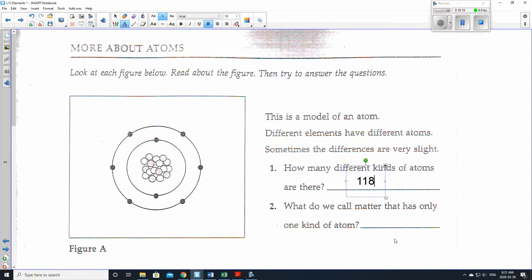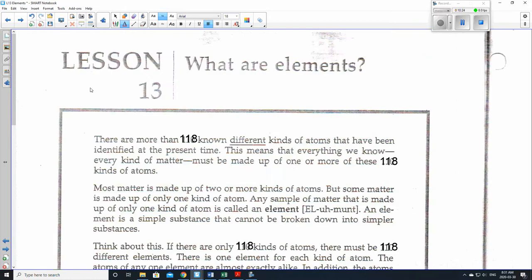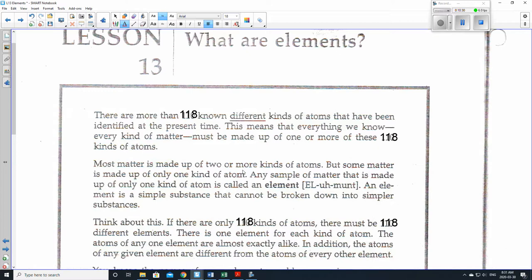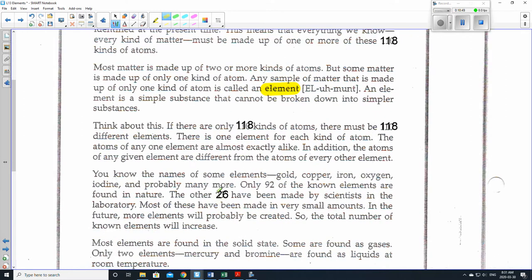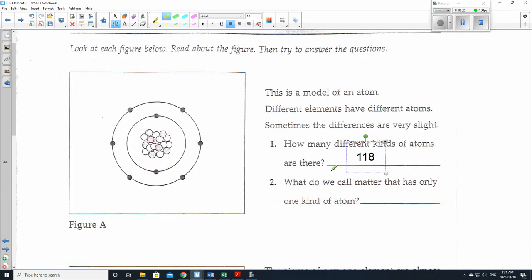What do we call matter that has only one kind of atom? Let's look back on this. Most matter is made up of two or more kinds of atoms. But some matter is made up of only one kind of atom. This is called an element. So why don't we highlight that word right there even. Let's highlight the important words. So 118 as well. And then the other one is 26.